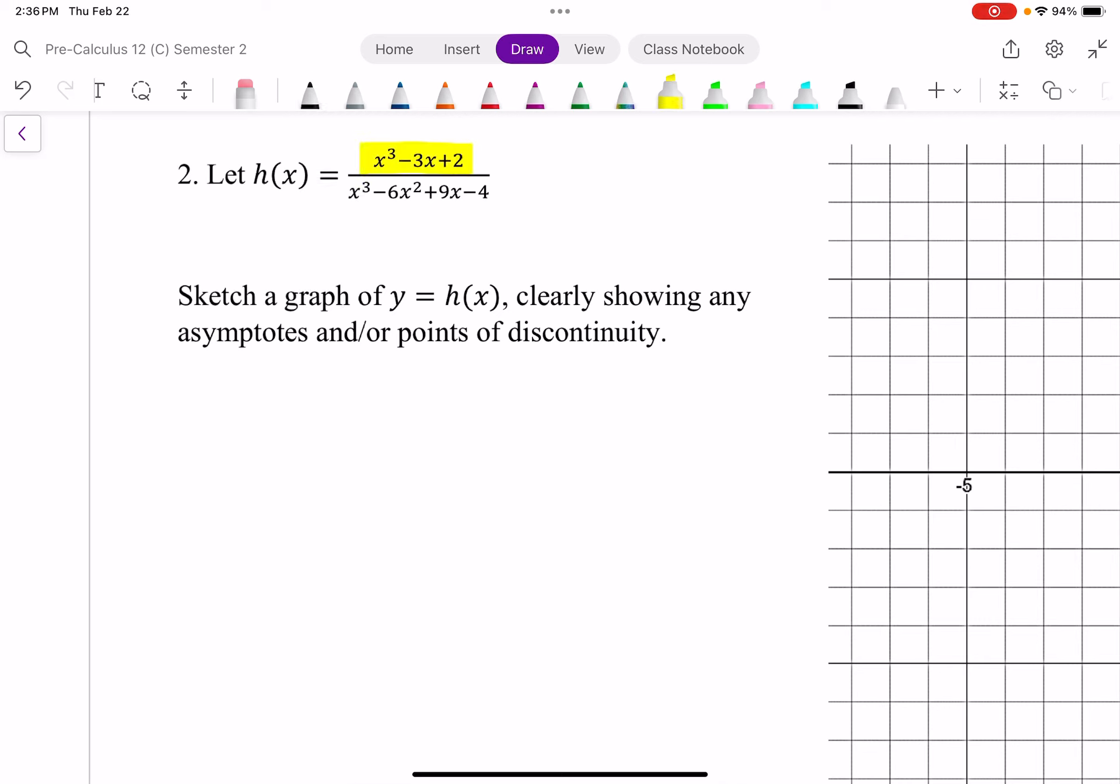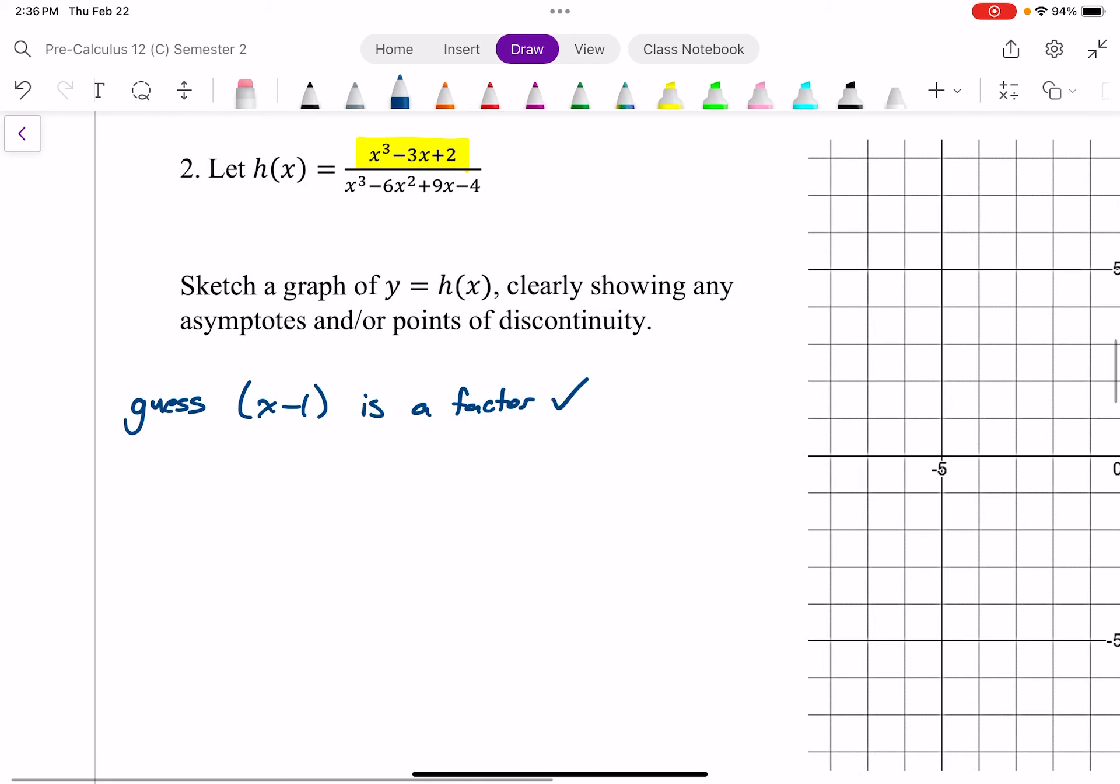And so to factor any sort of cubic or higher order polynomial, we first need to make an educated guess about what might be a factor. And whatever factors of this must be factors of the number 2. And so I'm going to guess that x minus 1 is a factor. And I can check if that's right by replacing x equals 1 into that first equation, the one I've highlighted in yellow. And if you substitute x with 1, you get a 0, which means I know that x minus 1 is a factor.